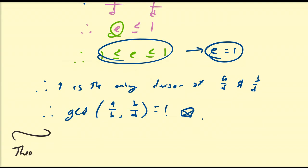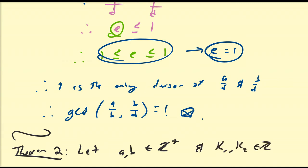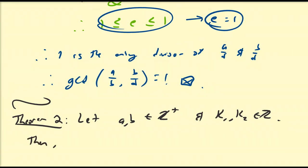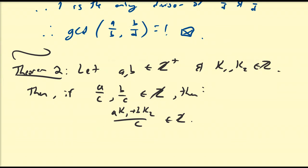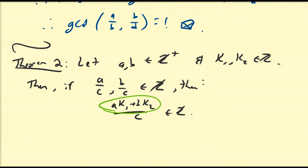Let's take a look at another theorem. Assume A and B are positive integers, and K1 and K2 are any integers. Assume that A over C and B over C are integers, meaning C divides A and C divides B. It's not necessarily true that C is the greatest common divisor of A and B, but it is a common divisor of the two. Then if both of those are integers, A·K1 plus B·K2 divided by C is also an integer — meaning C divides any linear combination of A and B with integer coefficients.